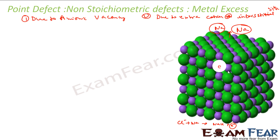Now if you see, it has excess sodium. And this anionic site occupied by electron is called F-center. F-center, F stands for farbe, parts color.